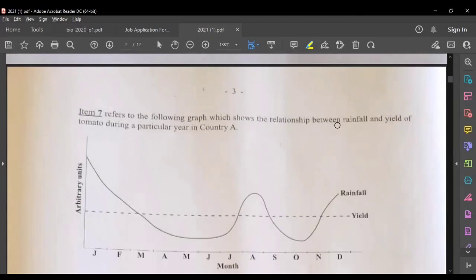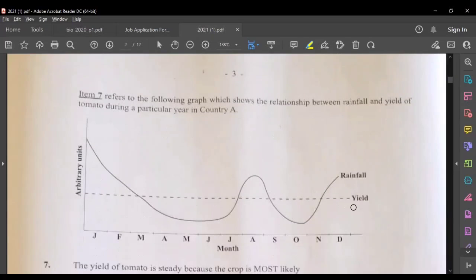Question seven refers to this graph which shows the relationship between rainfall and yield of tomato during a particular year in country E. So we have the yield, the yield is steady throughout the year and the rainfall is fluctuating. We have high amount of rainfall in January, low in May, high amount in August and it keeps fluctuating.